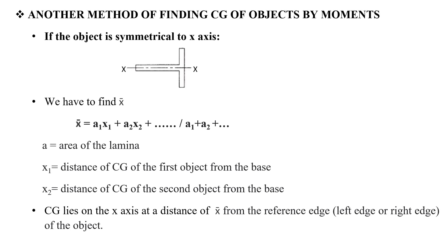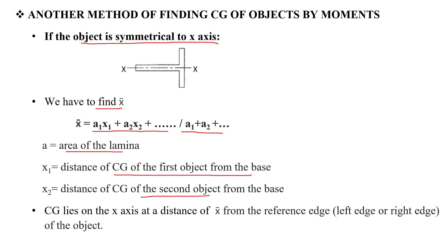Next, we go to locating the center of gravity of an object. If the object is symmetrical to the x-axis, we calculate x-bar. The formula is: x-bar equals (a1·x1 + a2·x2 + ...) divided by (a1 + a2 + ...), where a is the area of the laminate and x1, x2 are the CG distances of each part from the base.